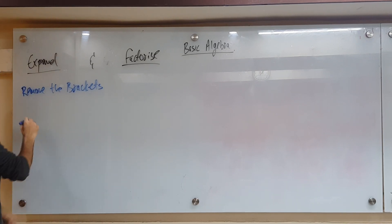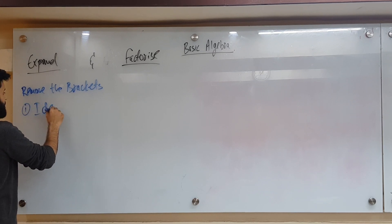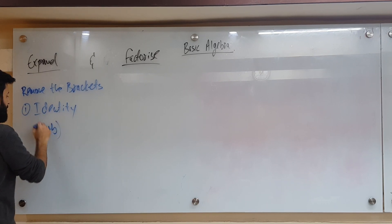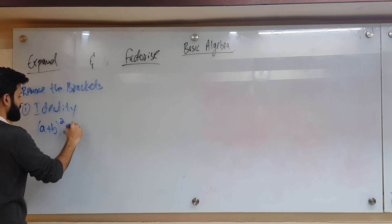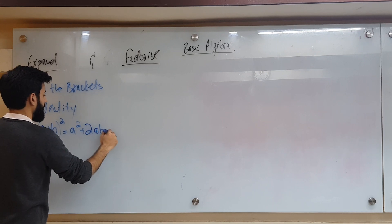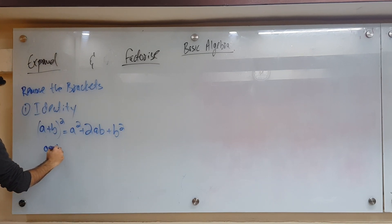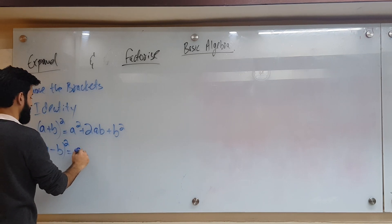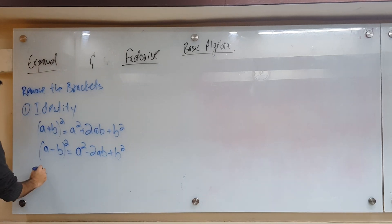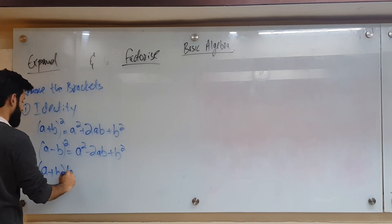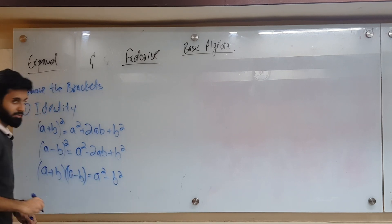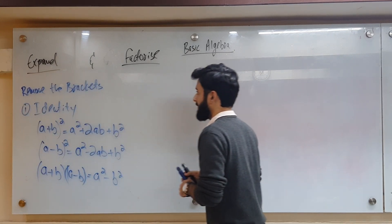As far as removing the brackets is concerned, you can do this with the help of identities. How many identities do we know so far? Three. First: (a+b)² = a² + 2ab + b². Second: (a-b)² = a² - 2ab + b². Third: (a+b)(a-b) = a² - b². We're going to do plenty of example questions.